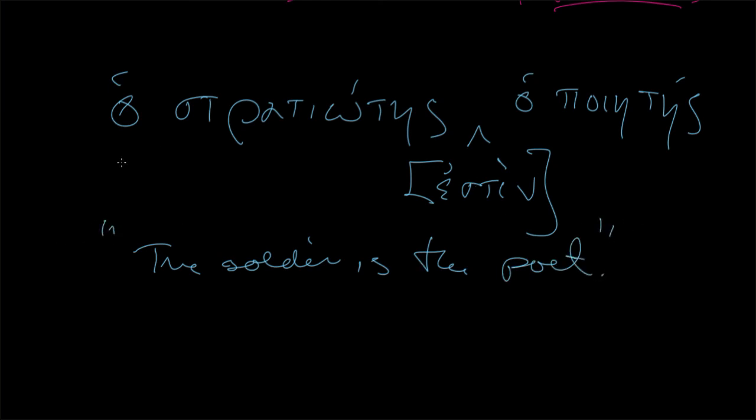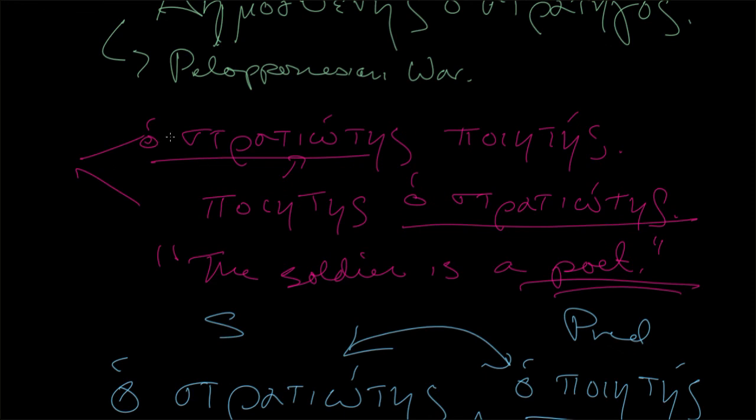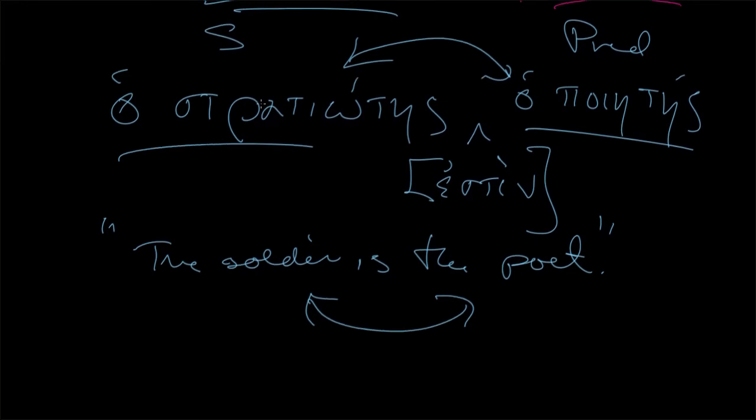And for our English translation, when both nouns, both the subject and then the predicate, have the article, we follow the Greek word order. We want to say, the soldier is a poet in this case. If we were to reverse the word order in Greek, we'd also reverse the word order in English. So back, scrolling up here, we could express this ho stratiotes poetes, or poetes ho stratiotes, both meant the soldier is a poet. We knew the soldier was going to be the subject of our English sentence because it had the article in both cases. Here, when both nouns have an article, we need to follow word order. This is where we have to pay attention. The soldier is the poet.